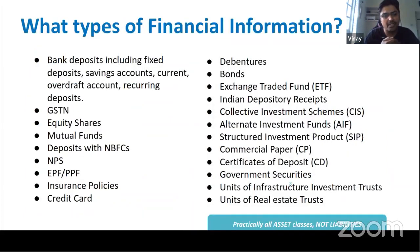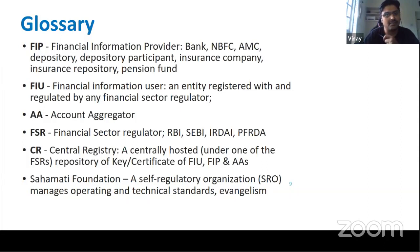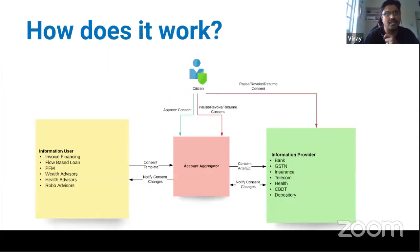The kinds of financial information available broadly include bank deposits, CASA accounts, GSTN, and other asset classes blessed by RBI. Note that it covers asset classes, not liabilities — so loan data will not come through this. Key terms: FIP is Financial Information Provider; FIU is Financial Information User; AA is Account Aggregator; FSRs are the four big regulators — RBI, SEBI, IRDA, and PFRD. These four have blessed the framework along with the Department of Revenue for GSTN. Sahamati is driving this initiative.